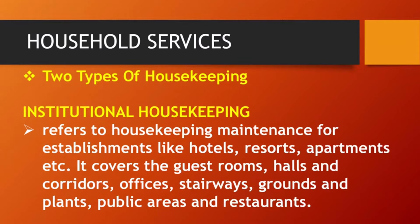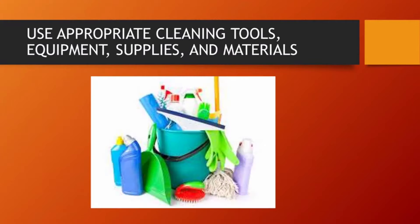Second type, institutional housekeeping, refers to housekeeping maintenance for establishments like hotels, resorts, apartments, etc. It covers the guest rooms, halls, corridors, offices, stairways, grounds and plants, public areas, and restaurants.